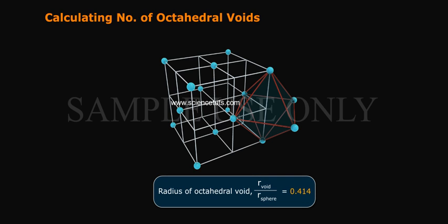Radius ratio of octahedral void, R void by R sphere, is equal to 0.414.